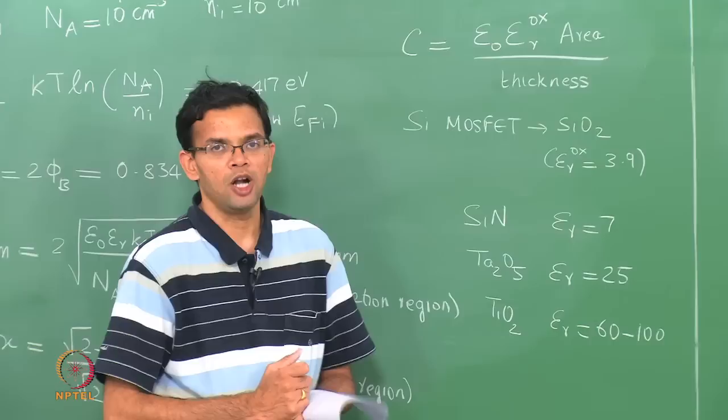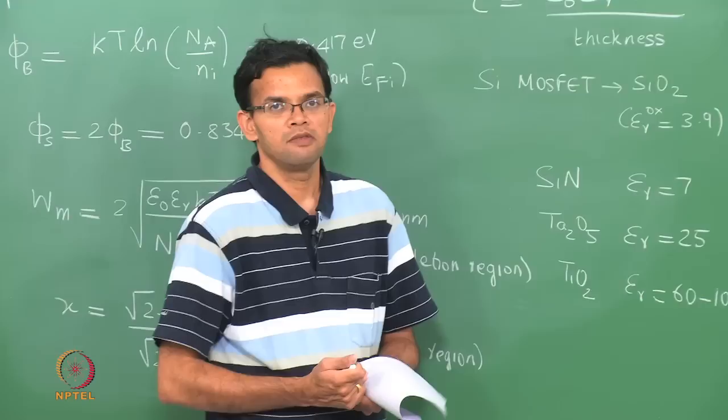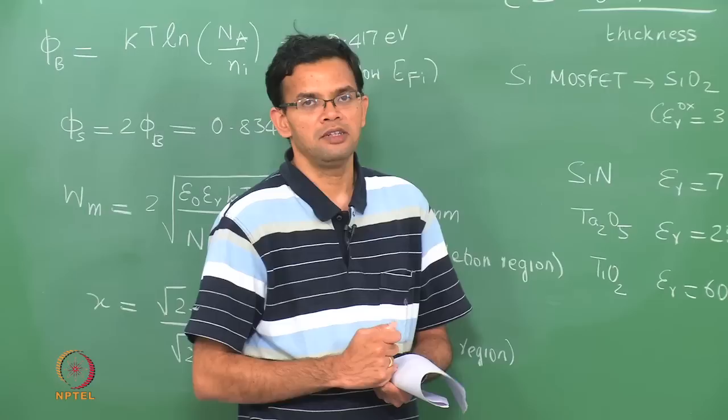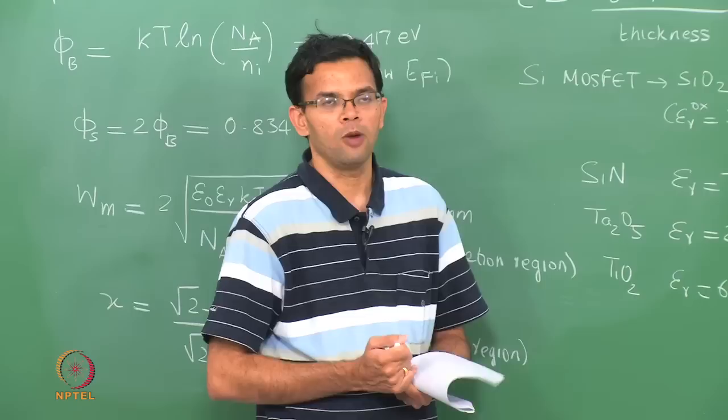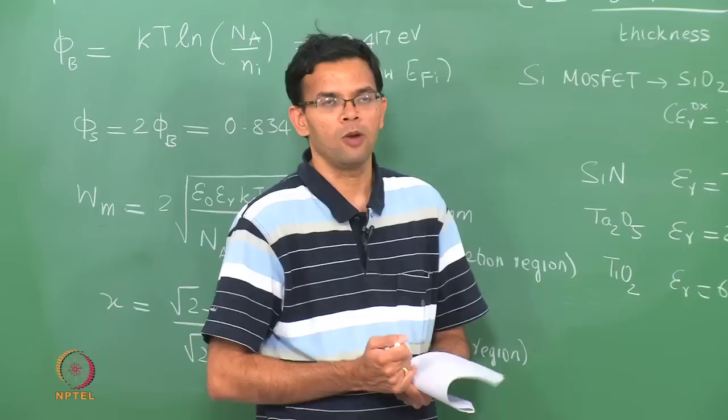With this we are done with the MOSFET part of the course and transistors as well. Next, we will start to look at what happens when light interacts with semiconductors. We are going to look at optoelectronic devices like LEDs and solar cells, but before that we will first treat the general interaction of light with semiconductors.